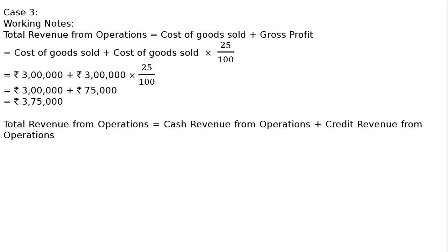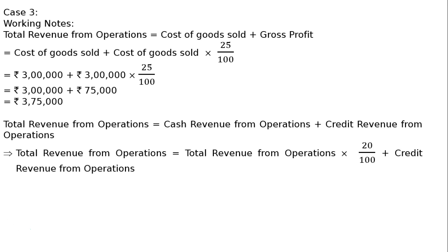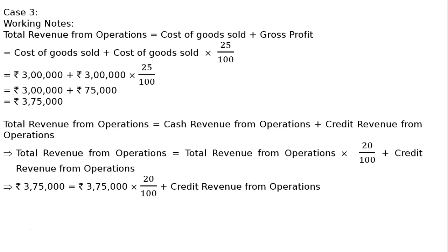Total revenue from operations equals cash revenue from operations plus credit revenue from operations. Cash revenue from operations is 20% of total revenue from operations. So Rs. 3 lakh 75,000 equals 20% of Rs. 3 lakh 75,000 plus credit revenue from operations. Therefore, credit revenue from operations equals Rs. 3 lakh.